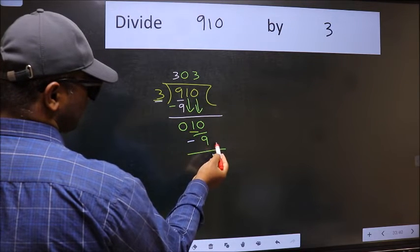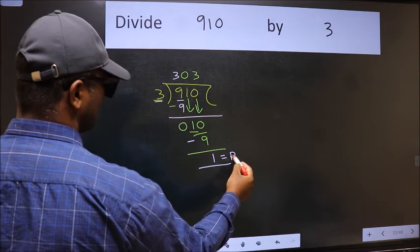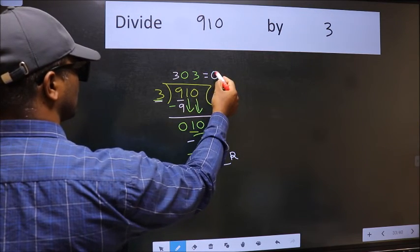No more numbers to bring down. So we stop here. This is our remainder and this is our quotient.